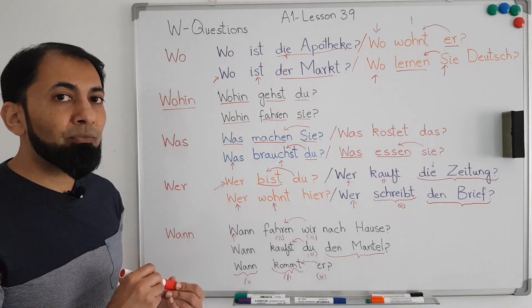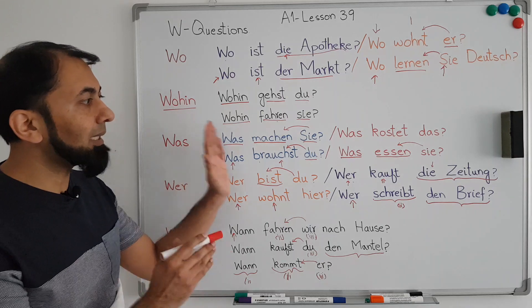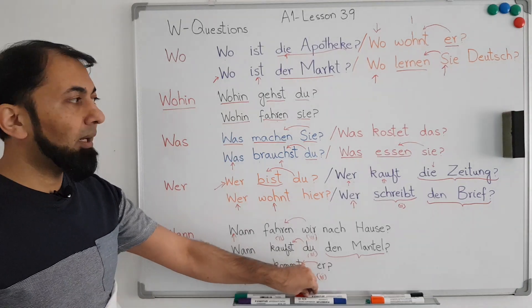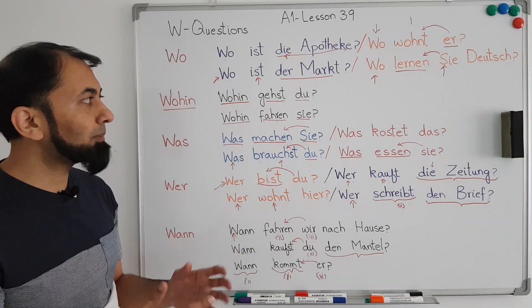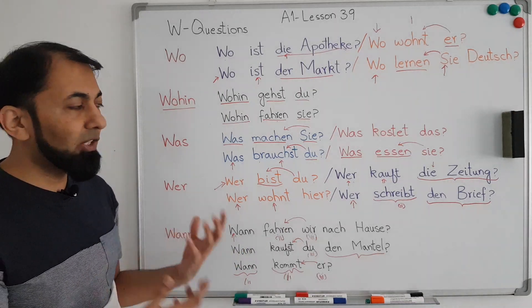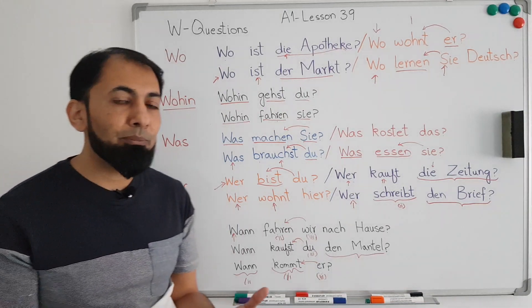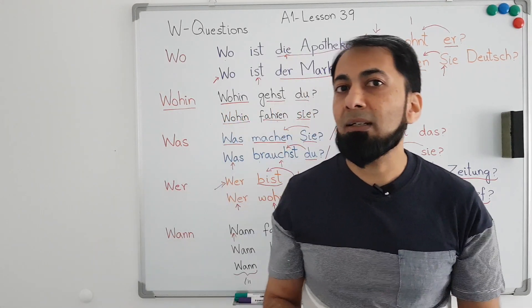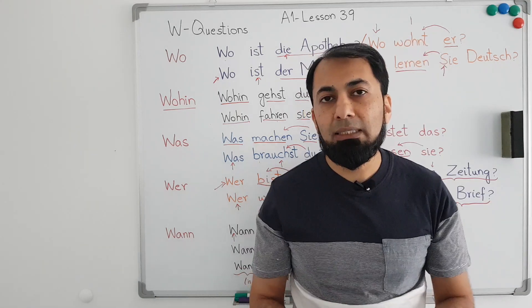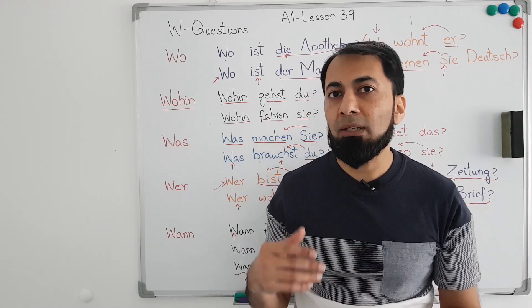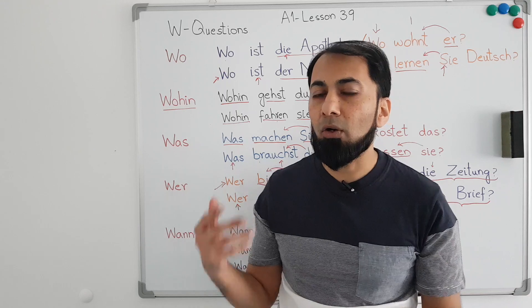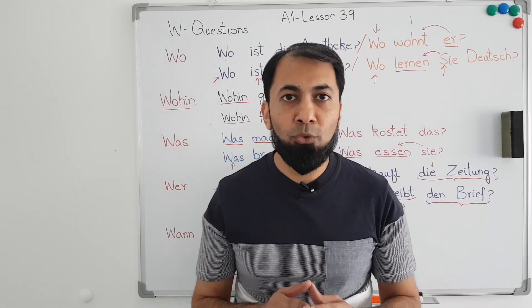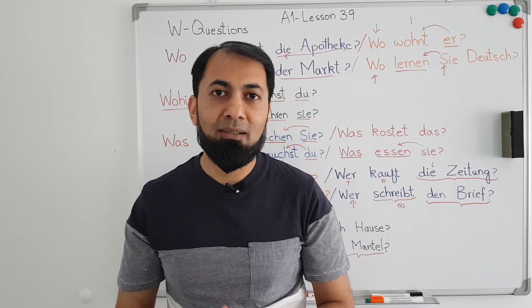So these are the W-question words which are very common, and these are the questions you must be able to ask at the A1 level. You should know the structure of how to ask simple questions like this. There are certain additional W-question words which we will discuss in the next lesson, which will be a continuation of this lesson. We will meet in the next lesson — bye!